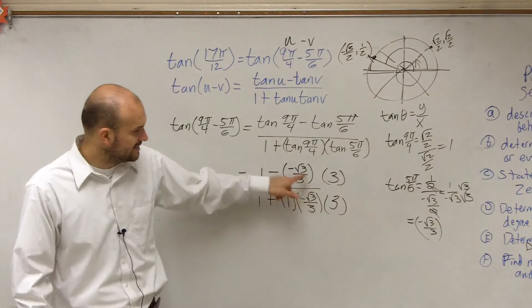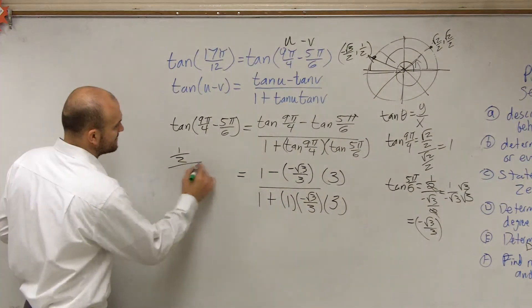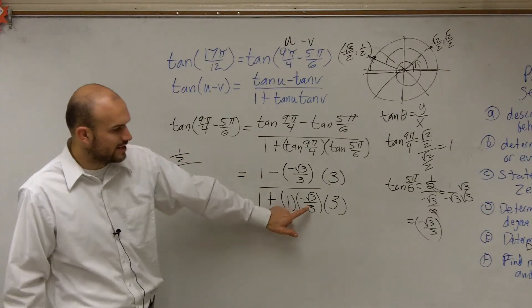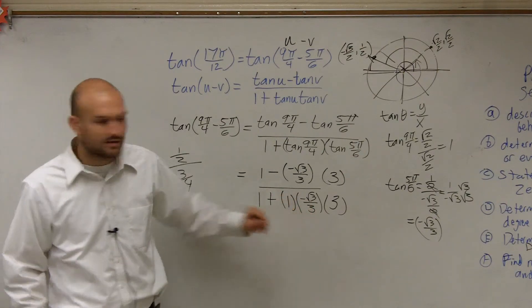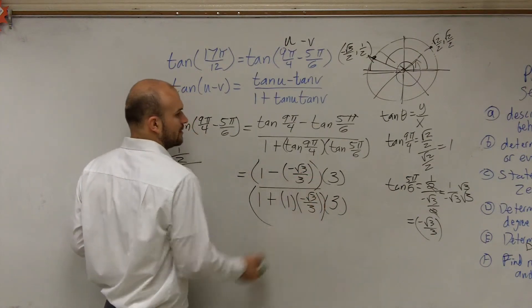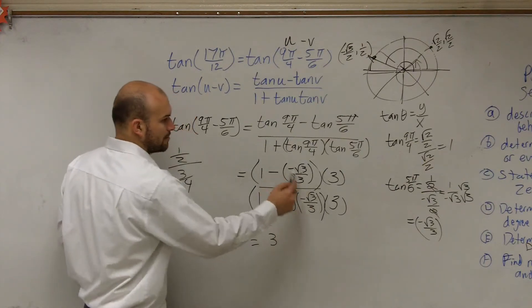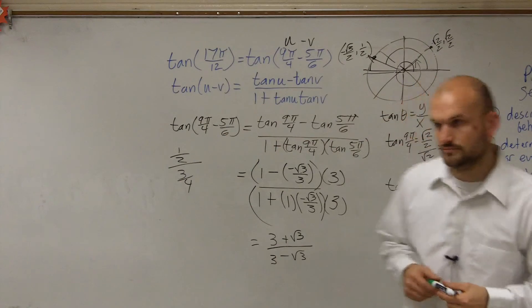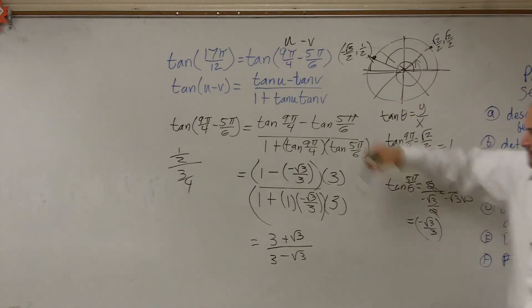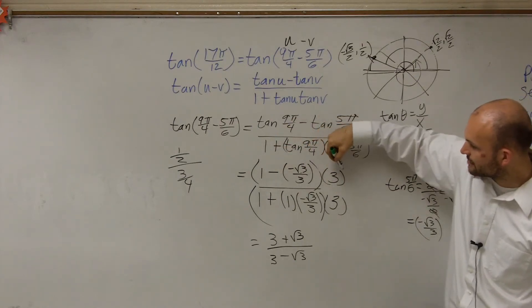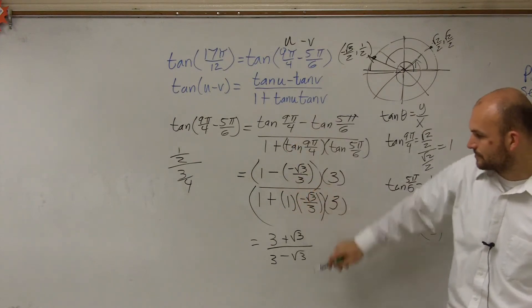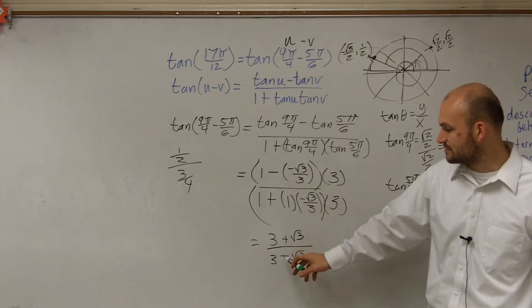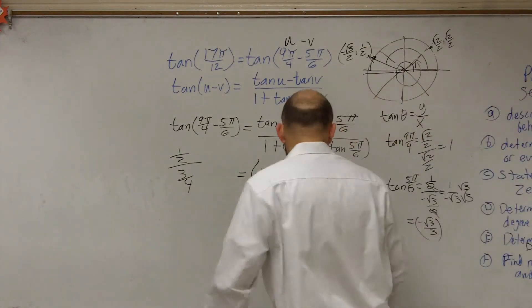Since we have a denominator of 3 in our fractions, we multiply both the numerator and denominator by 3 — this doesn't change the answer. When we distribute the 3, the fraction terms simplify: a minus and a negative give a positive, so the numerator becomes 3 plus √3, and the denominator becomes 3 minus √3.